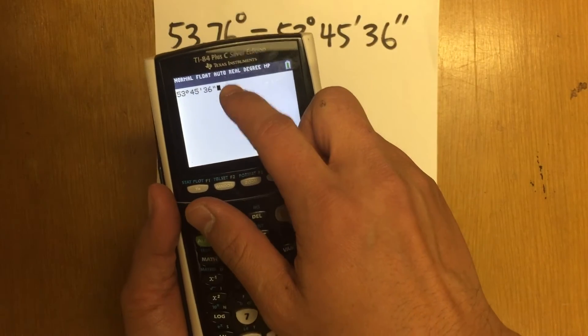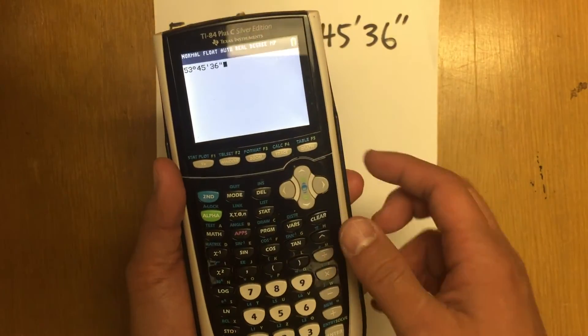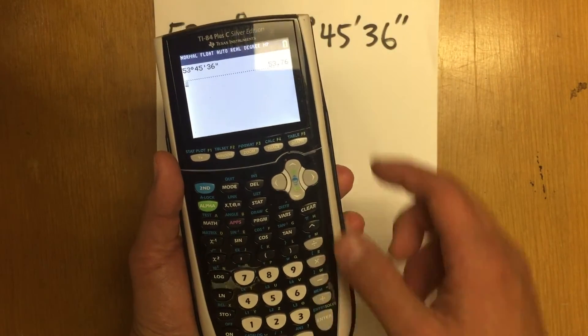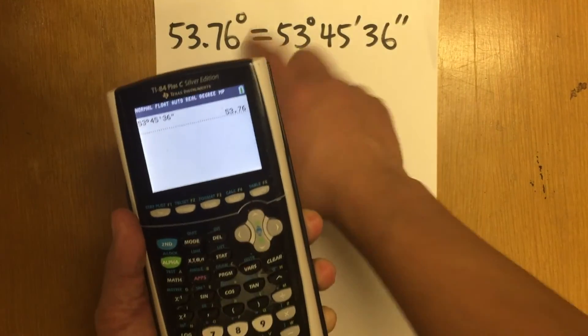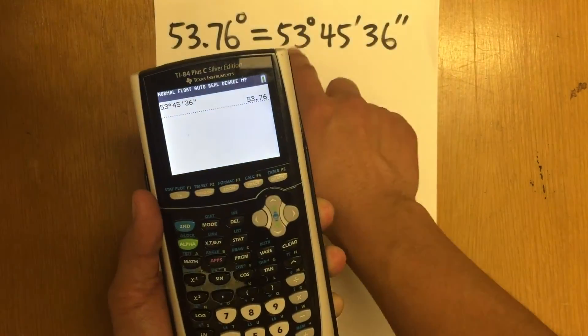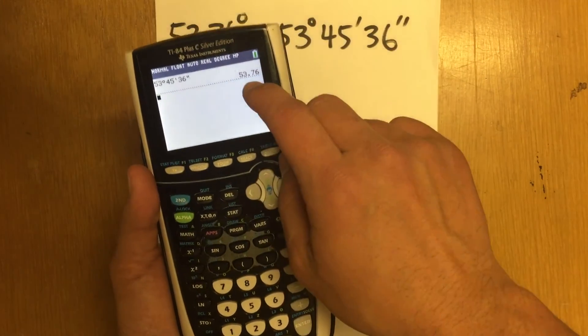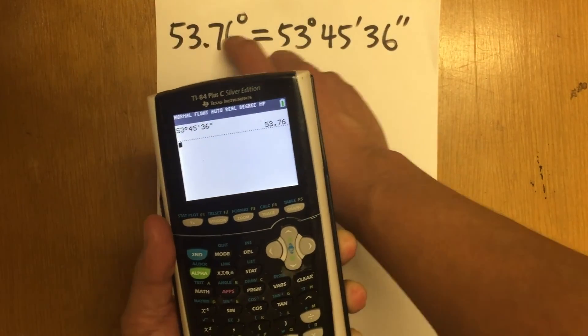And now we see we have the 36 seconds right here. And now I can just press enter and I get 53.76 degrees. So in this case, I can just enter the right hand side and press enter, and I will end up with the original decimal degrees.